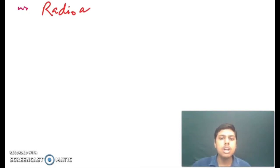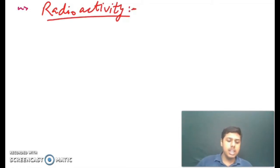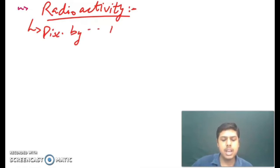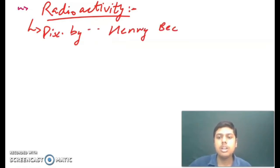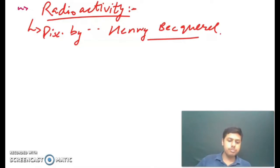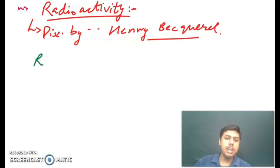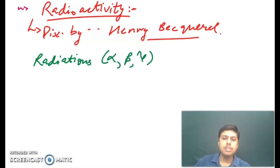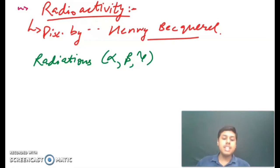Let us start the topic radioactivity. The term radioactivity was discovered by Henry Becquerel. Radioactivity is the spontaneous emission of radiations — that is alpha, beta and gamma — from an unstable nucleus. The substance which shows radioactivity is known as a radioactive substance.